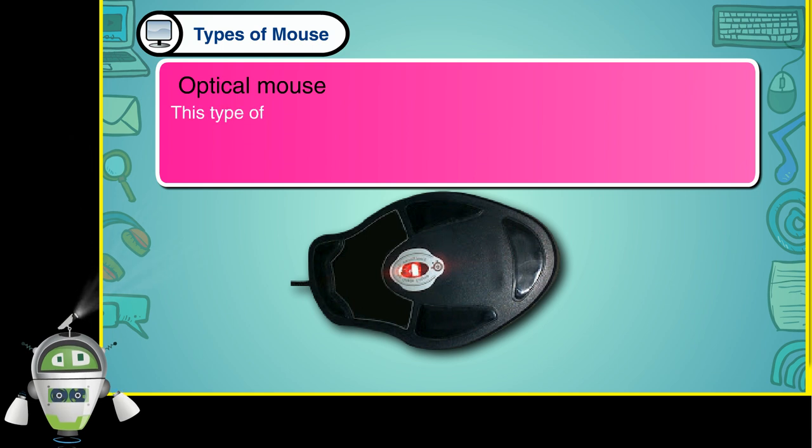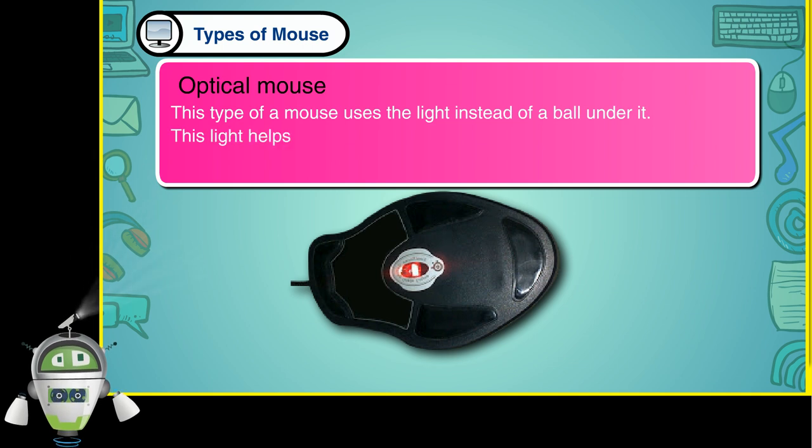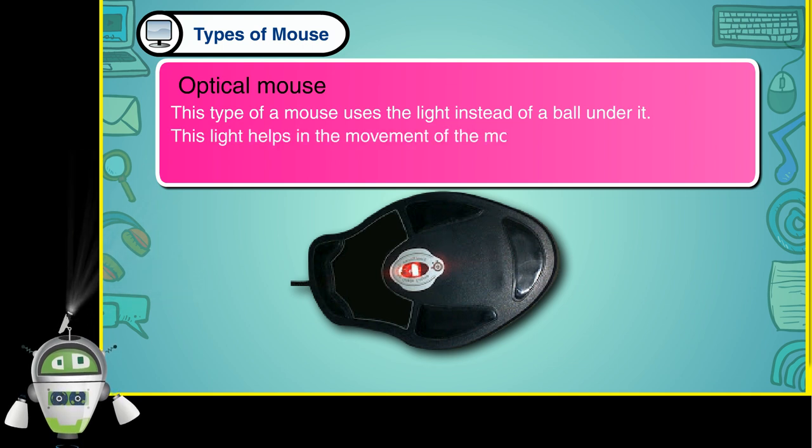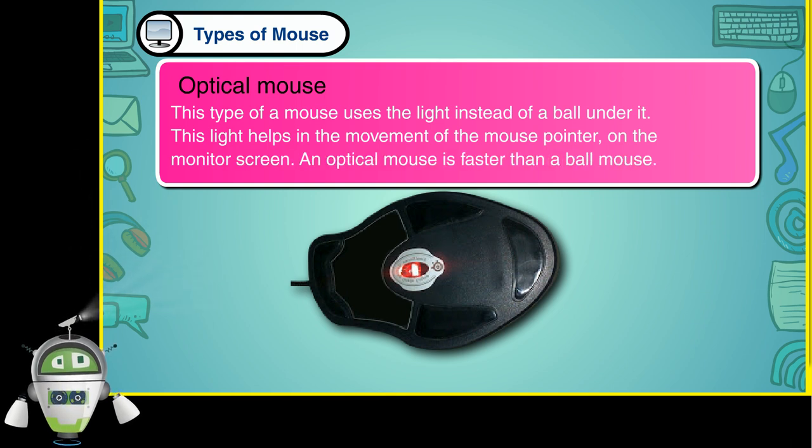Optical mouse. This type of a mouse uses the light instead of a ball under it. This light helps in the movement of the mouse pointer on the monitor screen. An optical mouse is faster than a ball mouse.